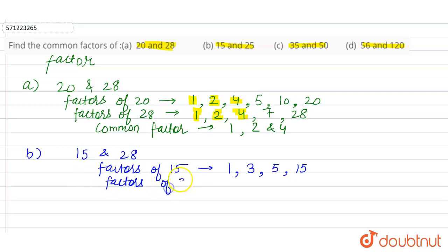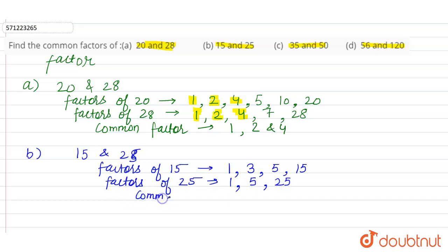Factors of 25: 1 × 25 = 25, then 5 × 5 = 25, and then 25 itself. Now checking for common factors of 15 and 25: 1 is a common factor in both, and 5 is also common. So the common factors of 15 and 25 are 1 and 5.